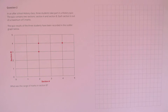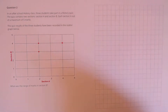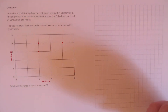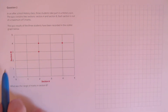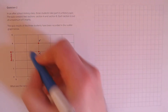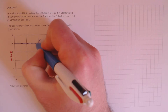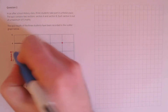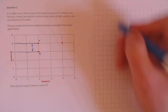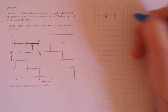Question 2. In an after-school history class, three students take part in a history quiz with sections A and B, each out of a maximum of five marks. What was the range of marks in section B? The range is simply the distance between the lowest point and the highest point. Looking at the section B axis, the lowest point is 3 and the highest point is 4, so the range is 4 minus 3, which equals 1.